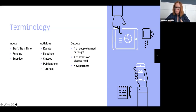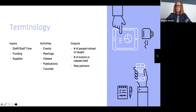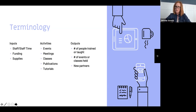Activities are probably the most self-explanatory — these are the things that you do as a part of your service or program. It could be events that you hold, meetings you have, classes you teach, a LibGuide you publish, a brochure you develop, or a tutorial you create. It's the actual activity of the program or service that you're developing.